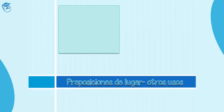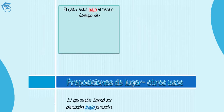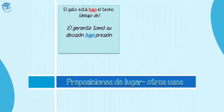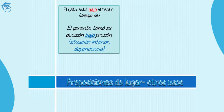Por ejemplo, veamos esta frase. El gato está bajo el techo — the cat is under the ceiling. Está bajo. We already know that it means under, debajo de. Pero, utilizado en esta frase, tiene otro significado — it has another meaning. El gerente tomó su decisión bajo presión — the manager made his decision under pressure. Here, of course, it is not under like the position of the decision. It means that it's a dependence of a situation. Indica dependencia, una situación inferior.